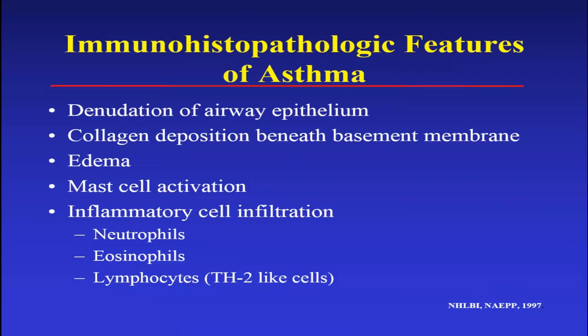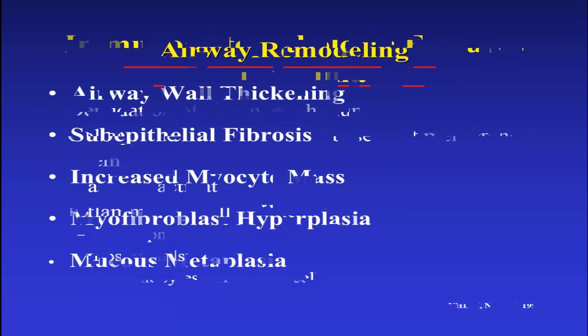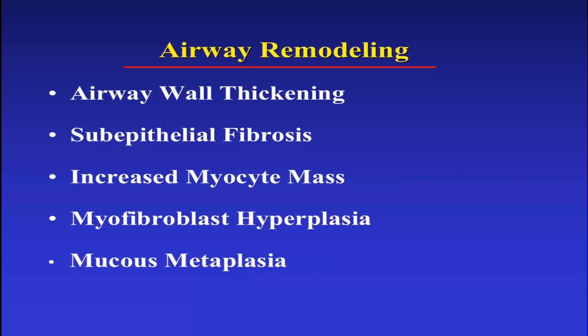The immunohistological pathologic features of asthma include denudation of airway epithelium, collagen deposition beneath the basement membrane and airway thickening — so-called remodeling — edema, mast cell activation, and inflammatory cell infiltration, predominantly neutrophils, eosinophils, and lymphocytes, which were deemed to be predominantly TH2 type lymphocytes found in the airway by biopsy.